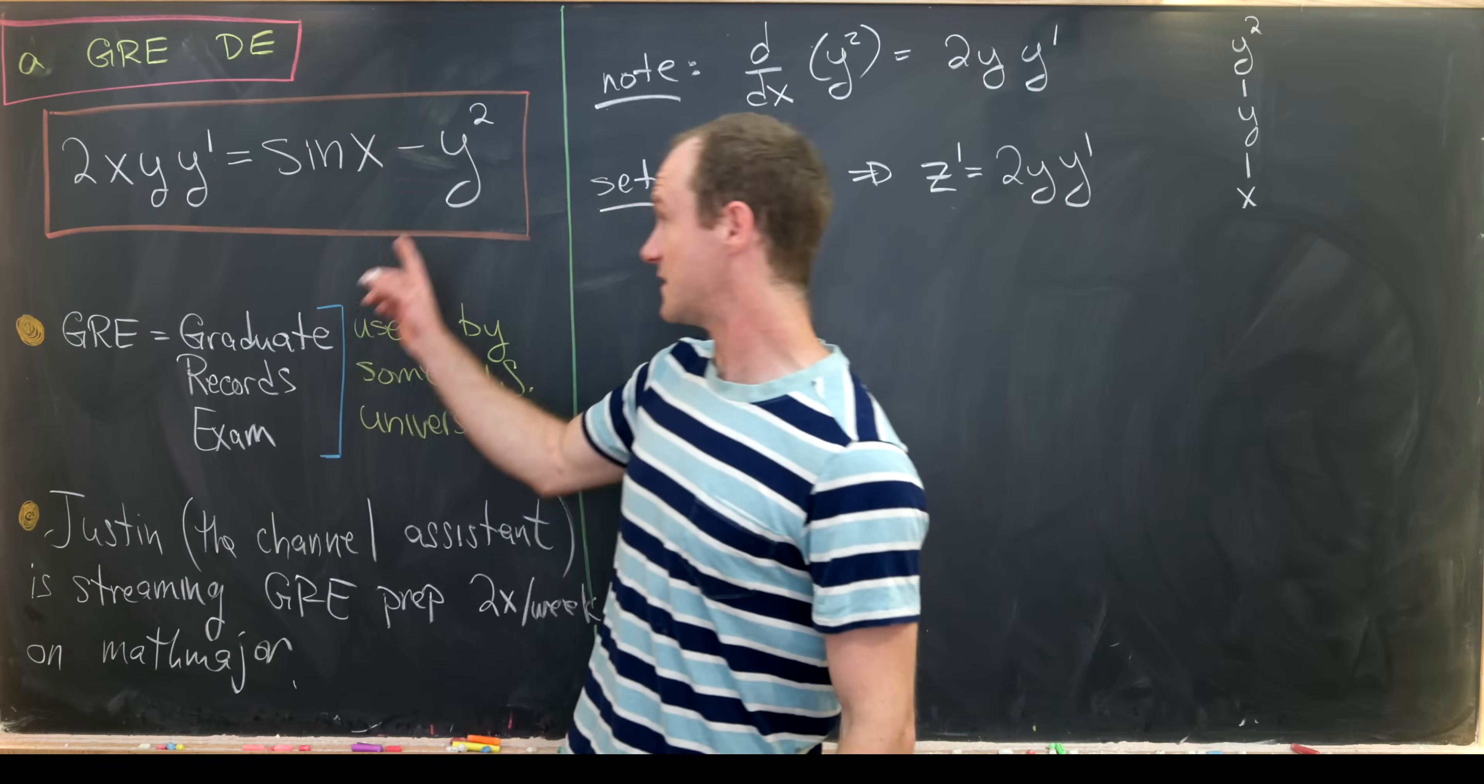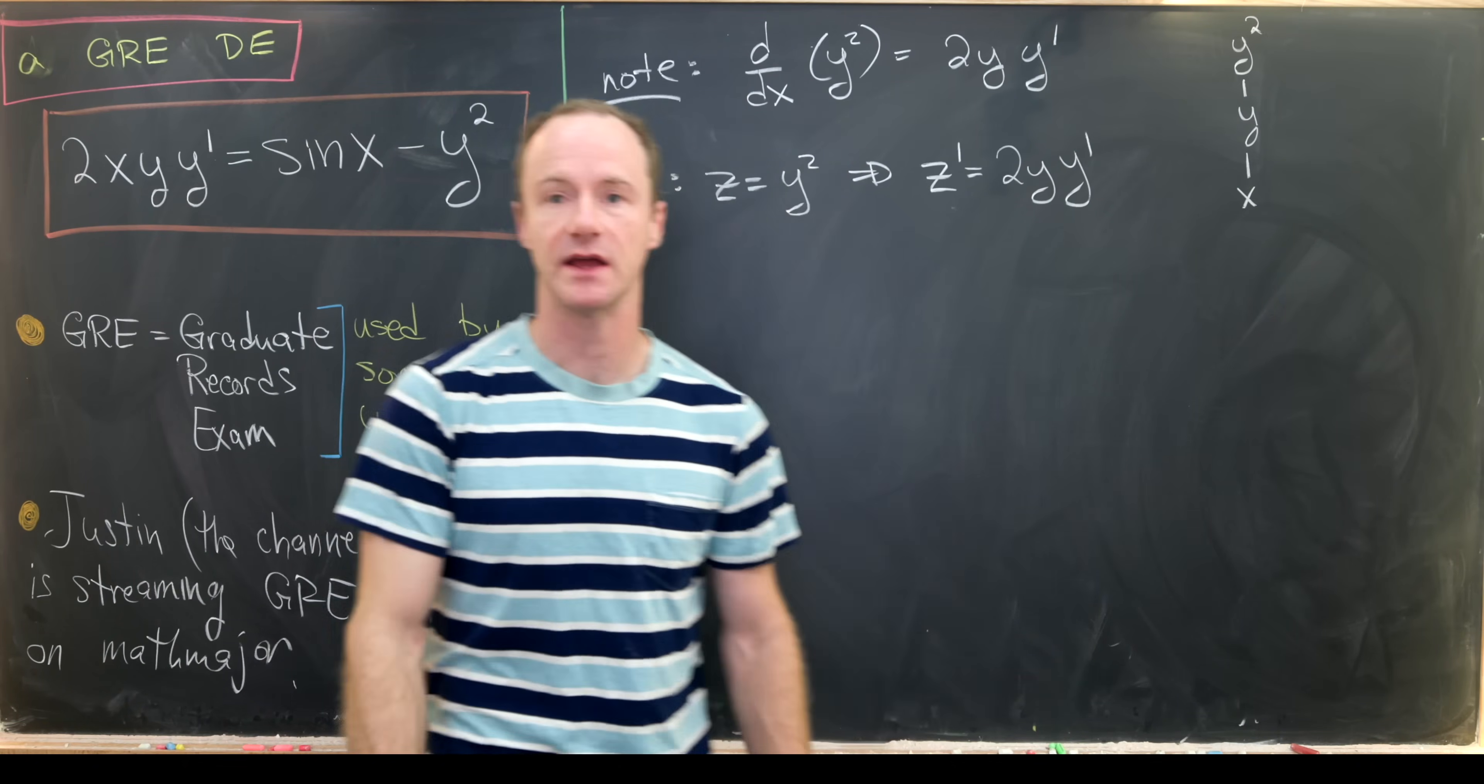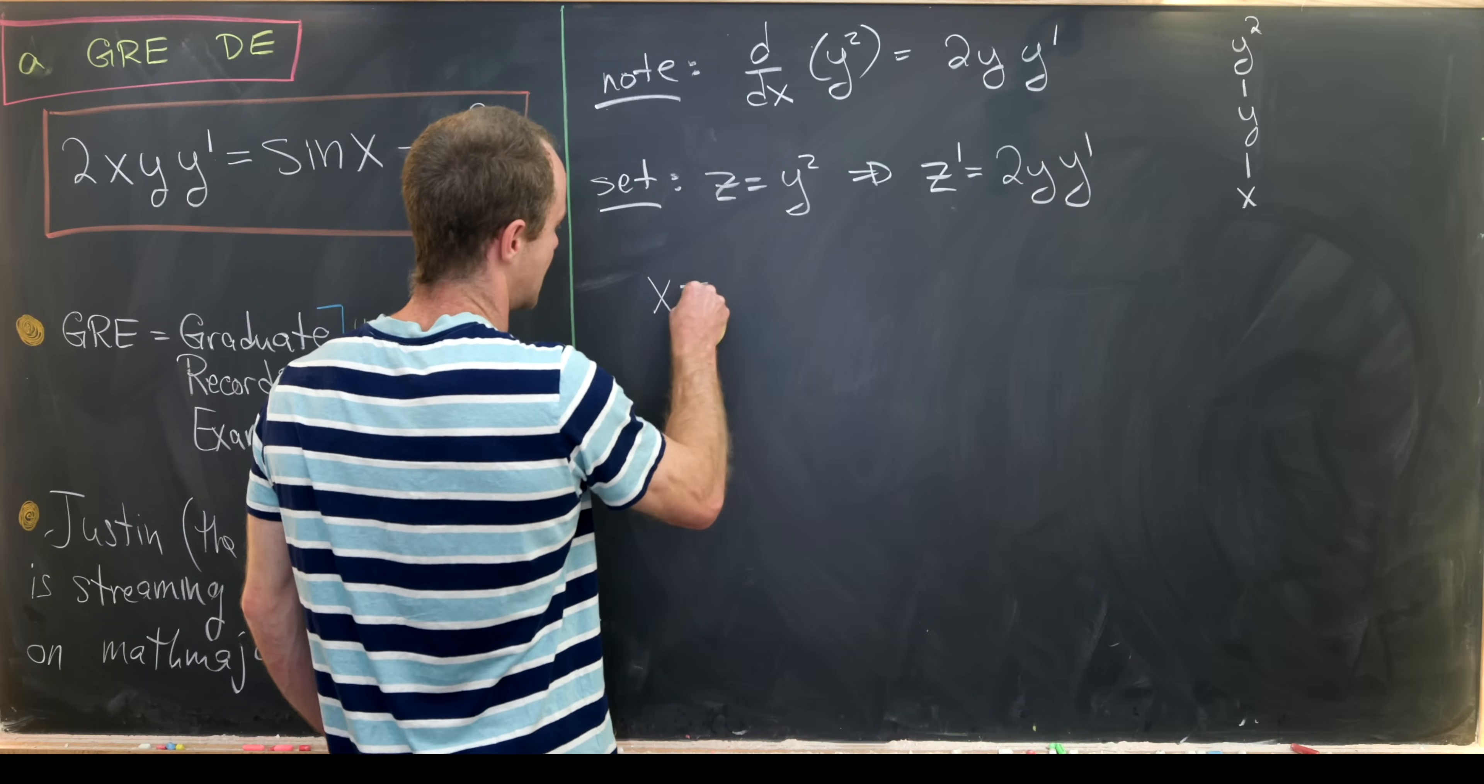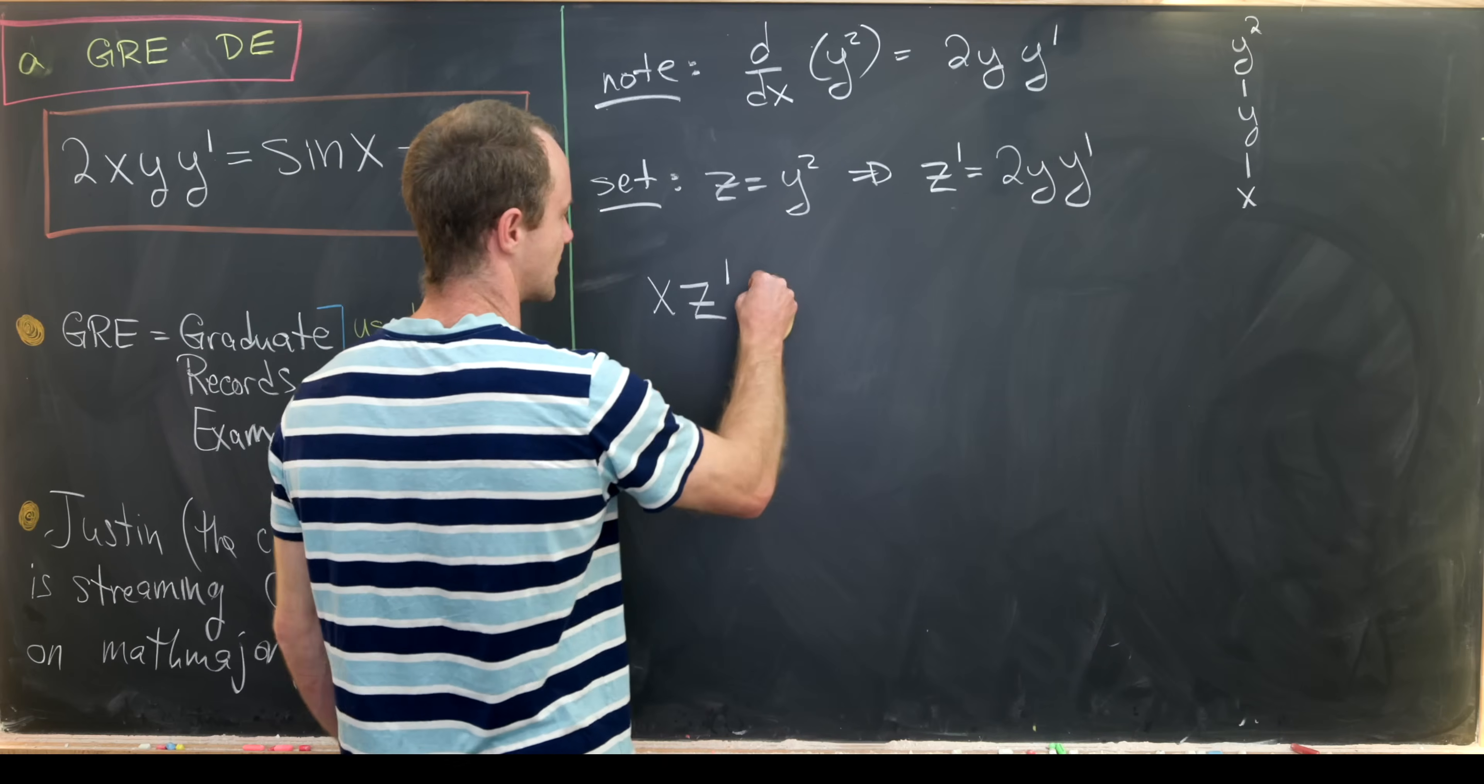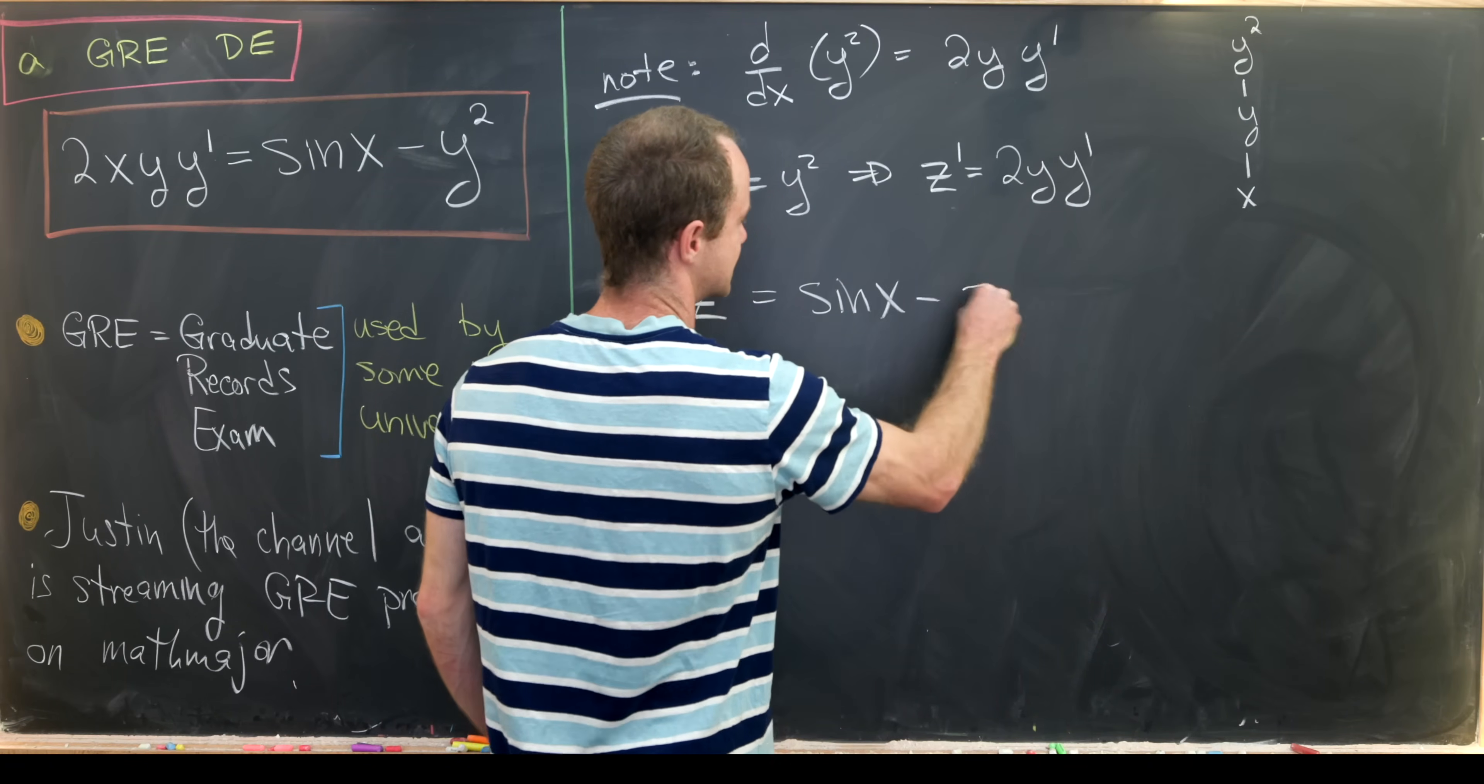And that will allow us to write this in terms of x and z instead of x and y. So let's see what it looks like. We have x times z prime equals the sine of x minus z.